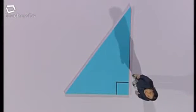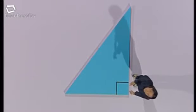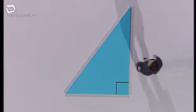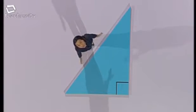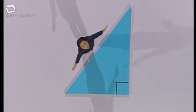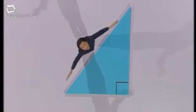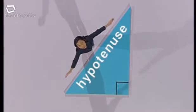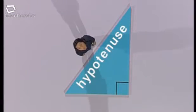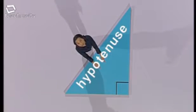This is a right-angled triangle, and it's called that because this angle here is exactly 90 degrees. Another feature of a right-angled triangle is that one side is always longer than the other two. This longer side is known as the hypotenuse, and it's easy to spot because it's always opposite the 90-degree angle.